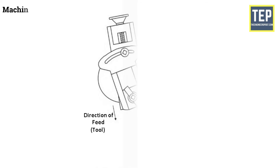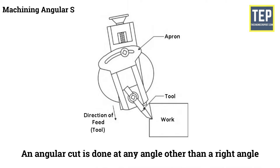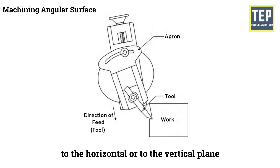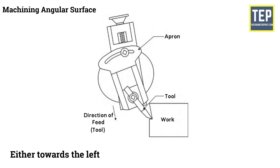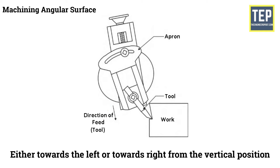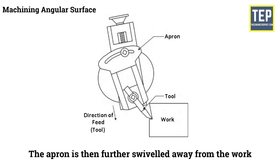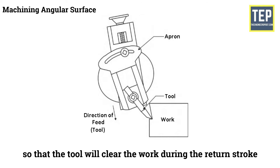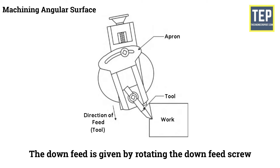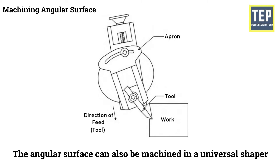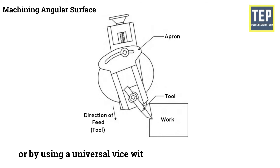Machining angular surfaces: an angular cut is done at any angle other than a right angle to the horizontal or vertical plane. The work is set on the table and the vertical slide of the tool head is swiveled to the required angle, either left or right from the vertical position. The apron is then further swiveled away from the work so the tool will clear the work during the return stroke. The down feed is given by rotating the down feed screw. The angular surface can also be machined in a universal shaper or by using a universal vice without swiveling the tool head.